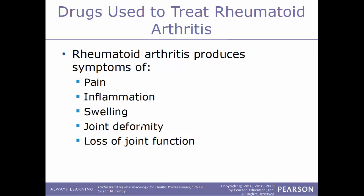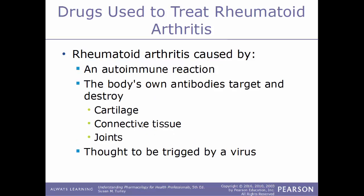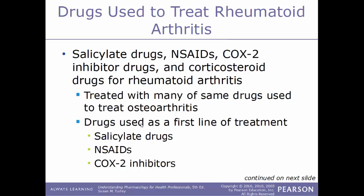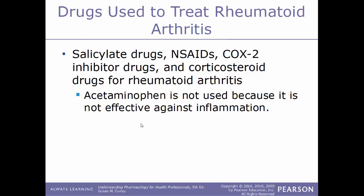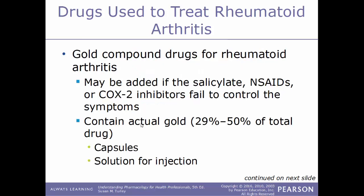Moving into drugs used to treat rheumatoid arthritis (RA): RA produces symptoms such as pain, inflammation, swelling, joint deformity (particularly in the hands), and loss of joint function. Rheumatoid arthritis is an autoimmune condition where the body's own antibodies target and destroy cartilage and connective tissue in the joints, and is thought to be triggered by a virus. Drugs used to treat RA include salicylates, NSAIDs, COX-2 inhibitors, and corticosteroids — many of the same drugs used to treat osteoarthritis. Acetaminophen is not used because it is not effective against inflammation.